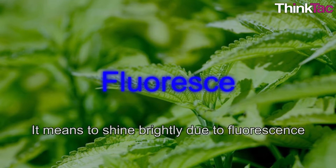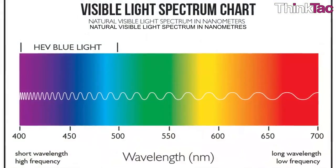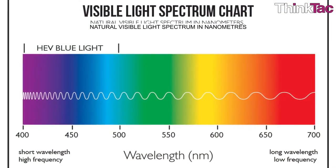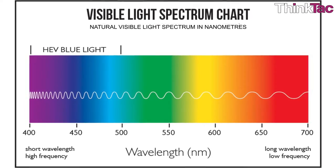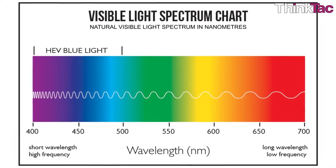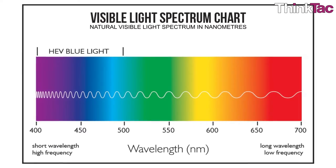To fluoresce means to shine brightly due to fluorescence. Spectrum is a band of colors like those seen in a rainbow, for example, produced by separation of the components of light by their different degrees of refraction, which is determined by their wavelength.